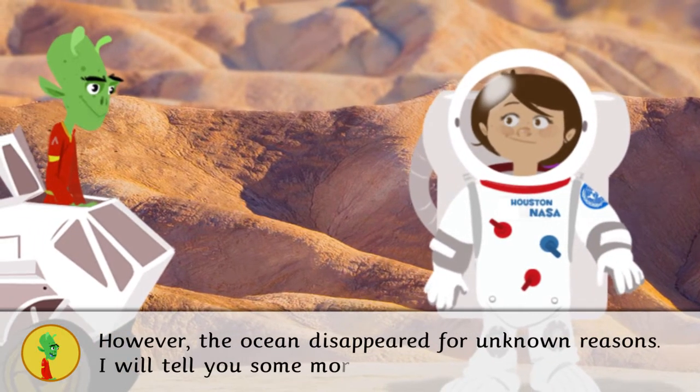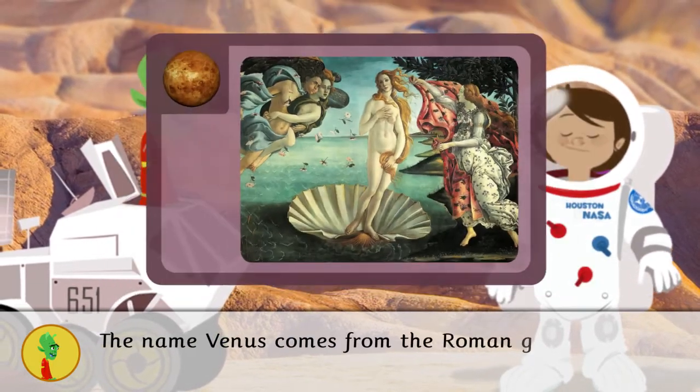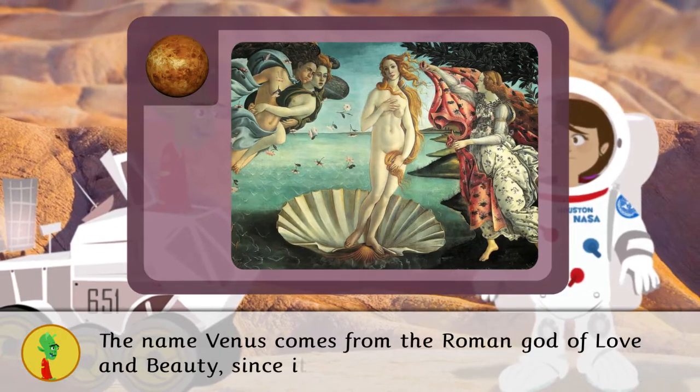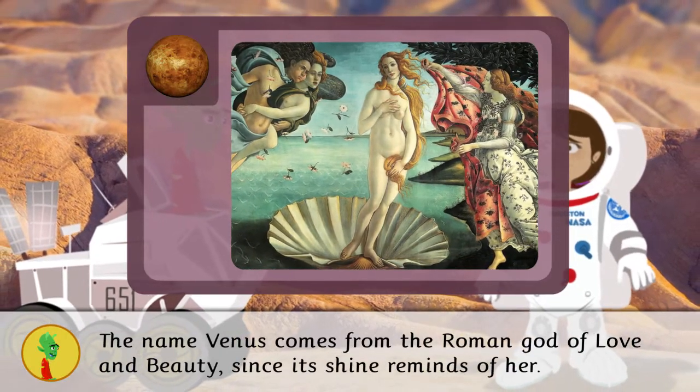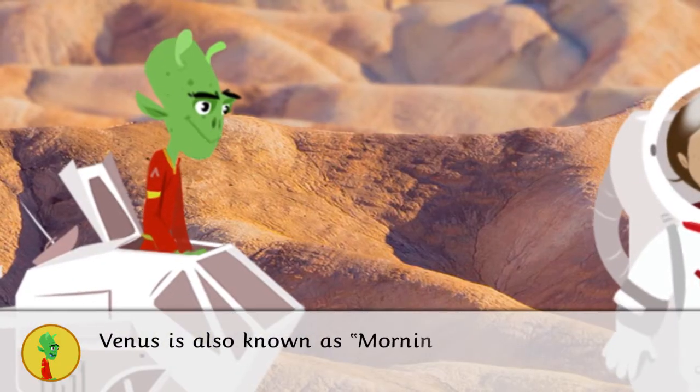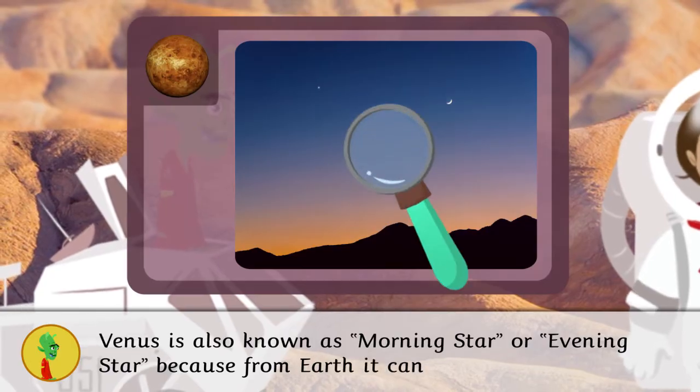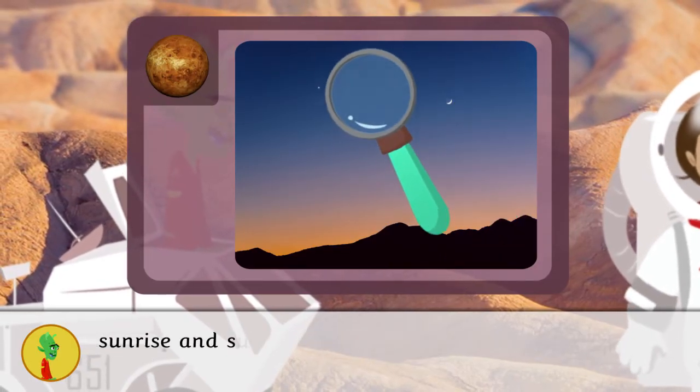I will tell you some more facts about Venus. The name Venus comes from the Roman god of love and beauty since its shine reminds of her. Venus is also known as morning star or evening star because from Earth it can only be seen at sunrise and sunset.